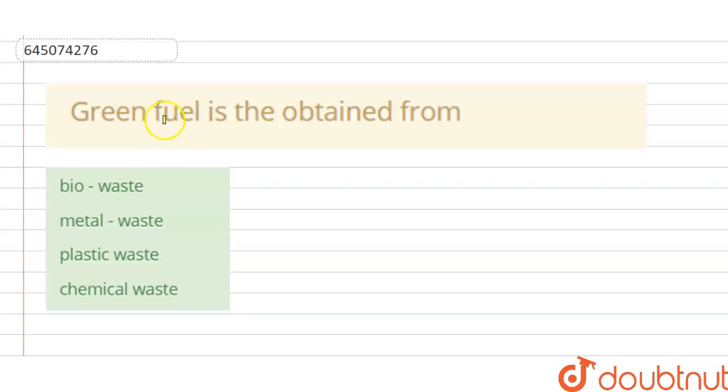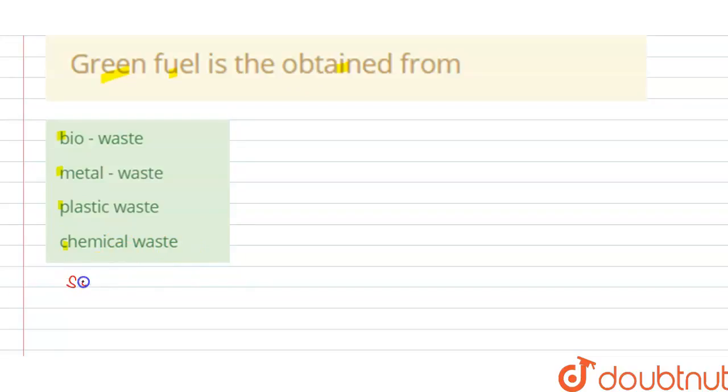Hello students, today our question is: green fuel is obtained from - options ABCD are given here. We have to choose the correct option. So the solution of this question is,